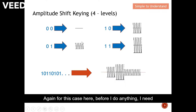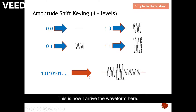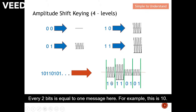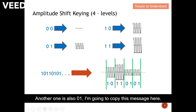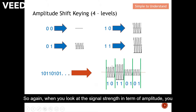For the four-level case, I need to pack my message two bits at a time. Every two bits equals one message symbol. So for example, 10 — I copy that message; 11 — I copy that message; then 01 — I copy that message; and another 01 — I copy that message again.